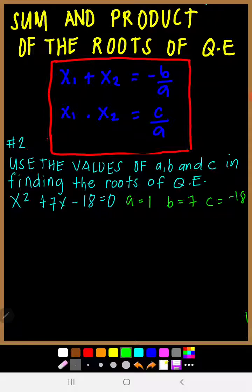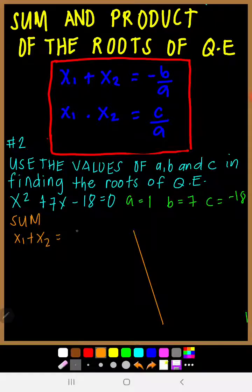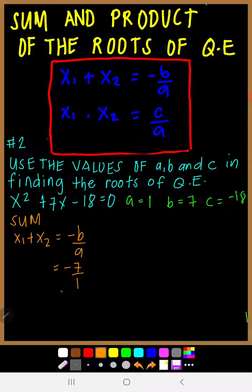Using the formulas again: x sub 1 plus x sub 2 equals negative b over a. That is negative 7 over 1. Since our b is positive, the numerator becomes negative 7. Our a is 1, so the sum is negative 7.